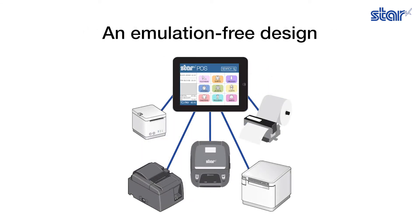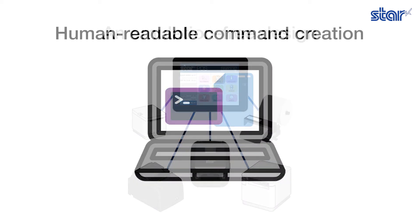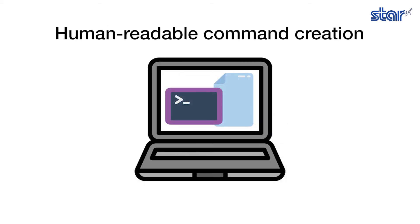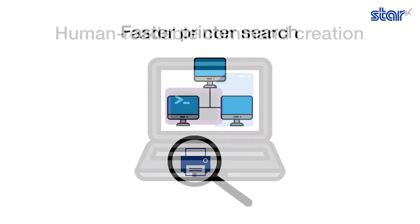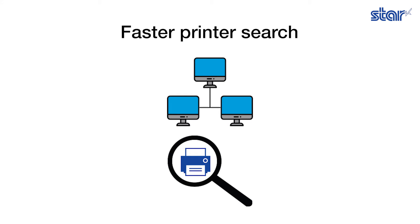All Star Expand documents will work with all Star printers — no special emulations or commands to remember. A command builder allows developers to create their receipts in a format that's easily readable and understandable. Documents are generated as JSON prior to printing to simplify troubleshooting.